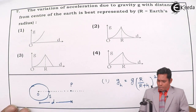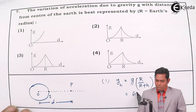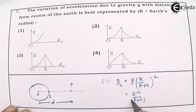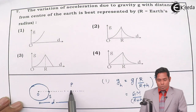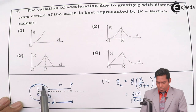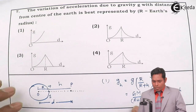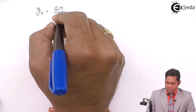If I write this another way — not in terms of small g — then I will write it as g_h = GM / (R + h)². Because the acceleration due to gravity is GM/R², so here R becomes (R + h). This is the height h and this is the radius R. The total distance R + h equals d. So if I put d here, I will get g_h = GM / d².